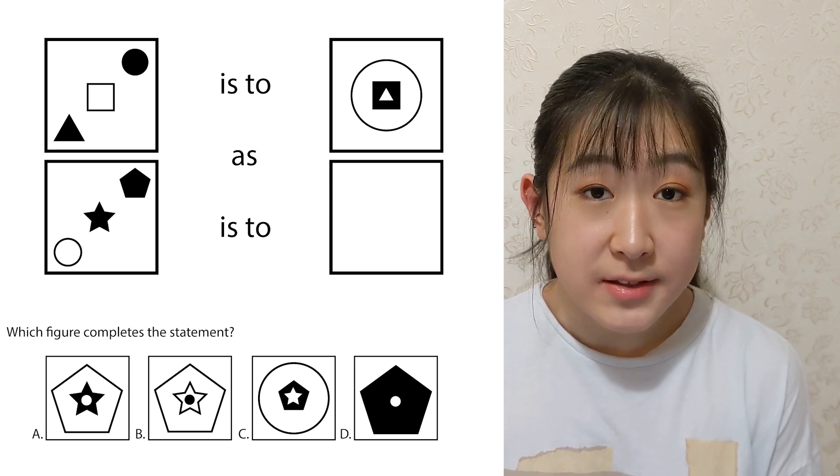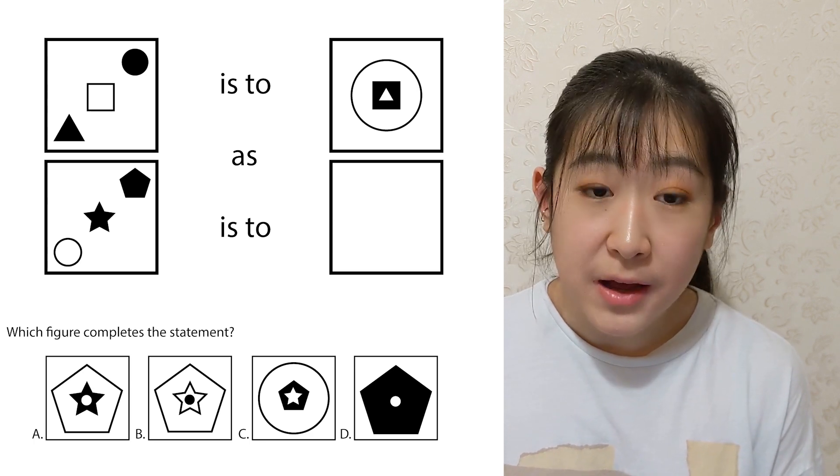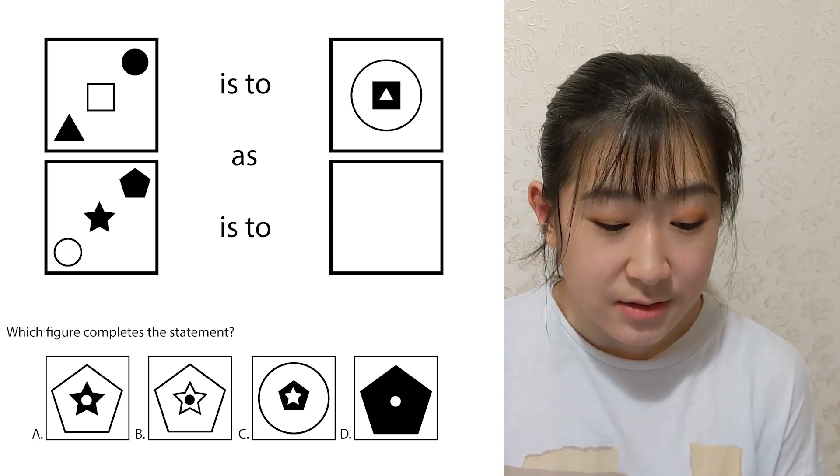The next question type is complete the statement. You'll be given two panels that logically follow one another, and one panel that needs to be completed. Use the same logic from the first two panels and apply it to the answer. Things to look out for include colour changes, reflections, rotations, adding or removing sides, and increasing or decreasing in number. In this example, the shapes in the top two panels all become stacked and then change colour — applying that logic to the bottom panel means B is the correct answer. Be wary of partly correct options, as you might pick the wrong answer if you glance through quickly.